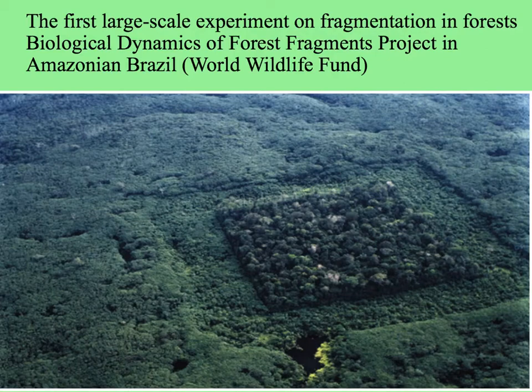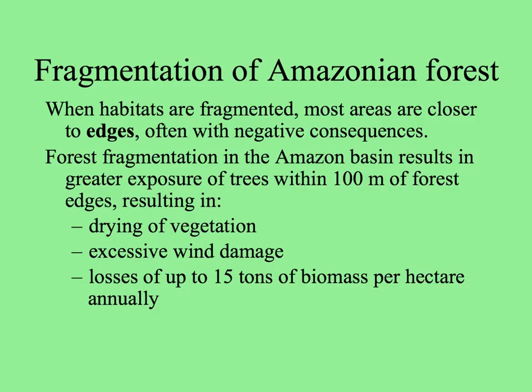Here's a picture from the air of a hectare plot of forest left with the landscape cleared around it. In these patches of forest, negative consequences affect the organisms closest to the edges because there's greater exposure — the vegetation closer to the edge of the patch dries out, gets damaged by wind, and the plants grow more slowly. It's been estimated that in one hectare of forest like that patch, 15 tons of biomass less is produced.